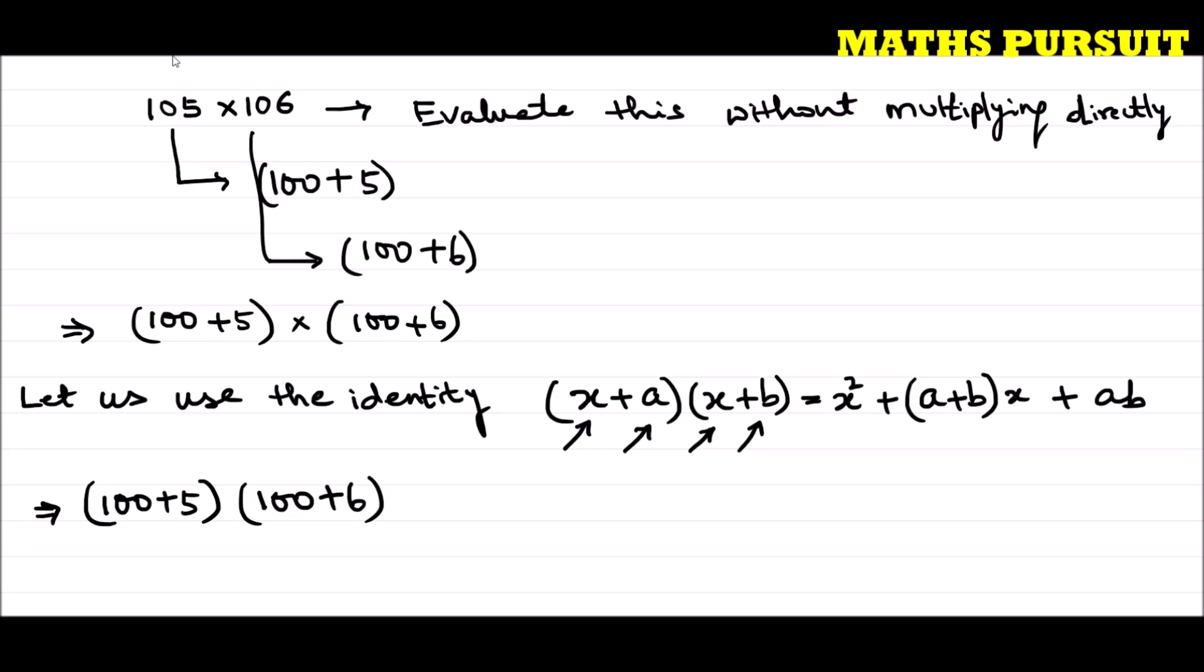If I represent the above expression, which is (100 + 5)(100 + 6), in the identity (x + a)(x + b) = x² + (a + b)x + ab, here our 100 is equal to x.